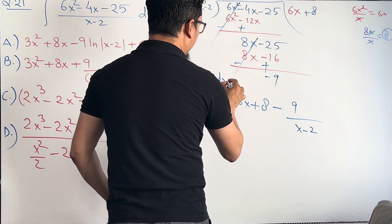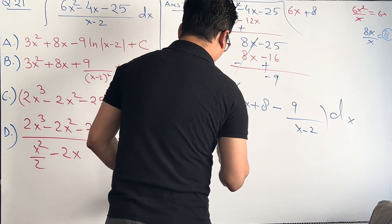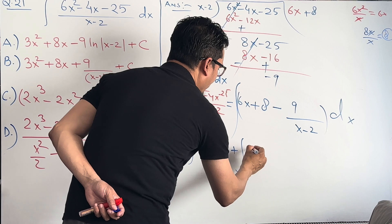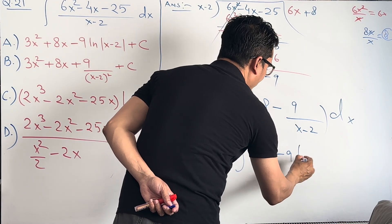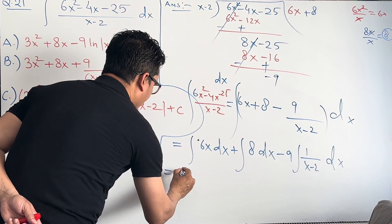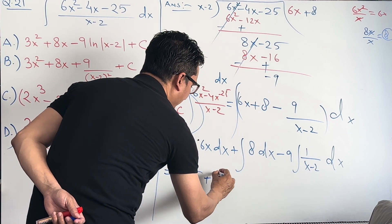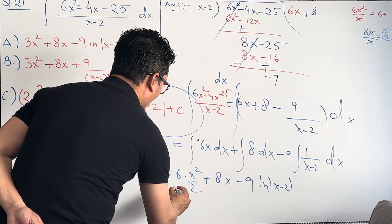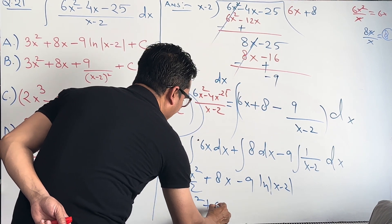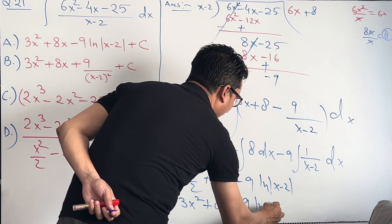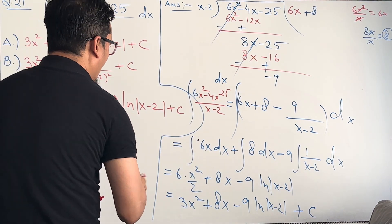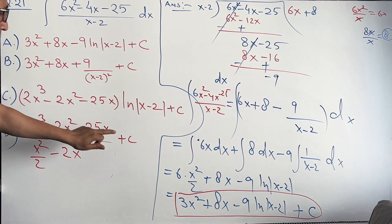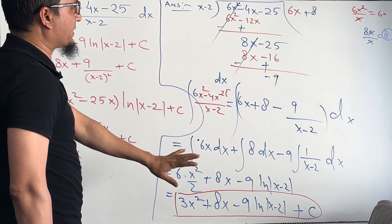Integrating term by term: the integral of (6x + 8 - 9/(x-2)) dx becomes: the integral of 6x dx, plus the integral of 8 dx, minus 9 times the integral of 1/(x-2) dx. So we get: 6 times (x²/2) + 8x - 9·ln|x - 2| + C, which simplifies to 3x² + 8x - 9·ln|x - 2| + C. This is the final answer.